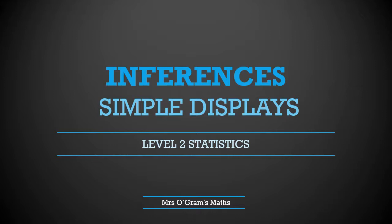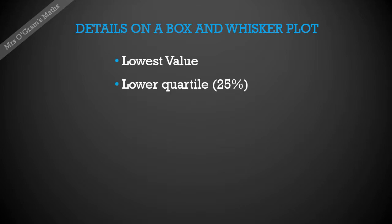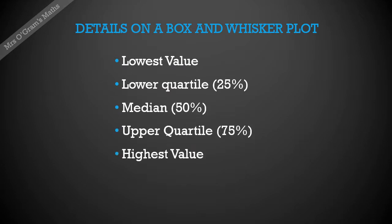This video is going to look at some of the simple displays that we can do when comparing groups of data. First up we are going to look at a box and whisker plot and the type of details that go on to it. So we need to know the lowest value, the lower quartile, the median, the upper quartile, and the highest value to be able to plot that onto a box and whisker.